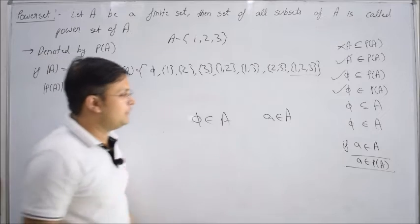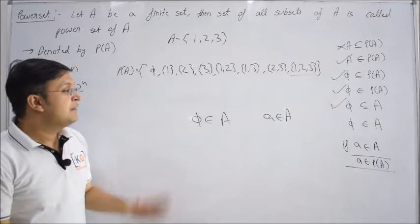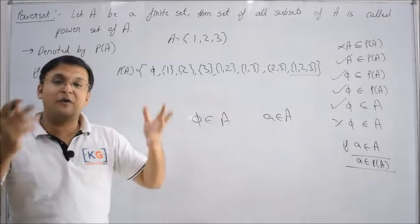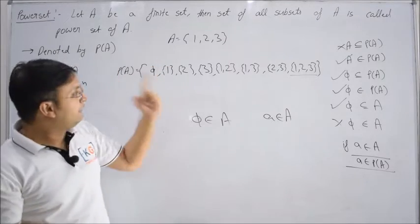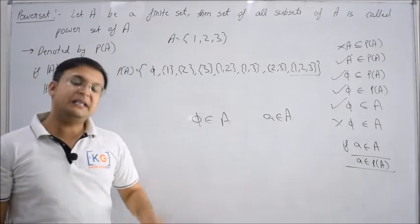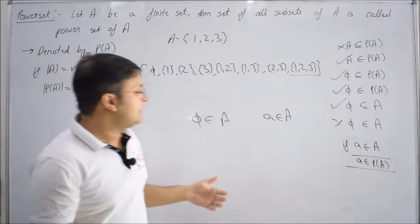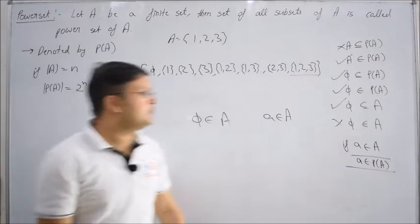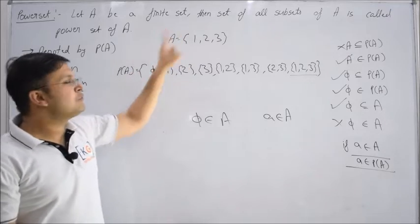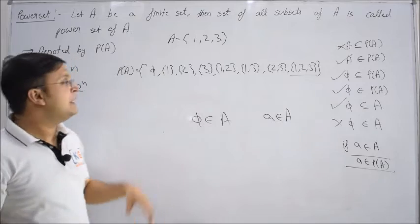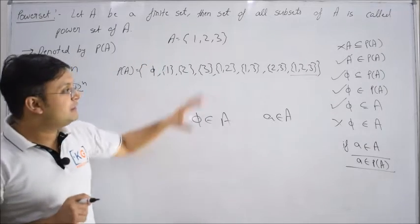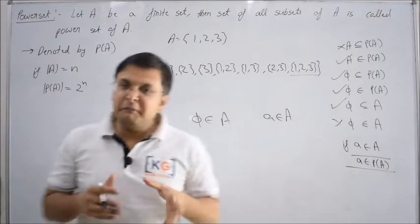Now: Φ is a subset of A — again, Φ is a subset of every set, so TRUE. But does Φ belong to A? No. If Φ belonged to A, you would be able to see Φ as an element listed in A, like we can see it in P(A). But in A = {1, 2, 3}, Φ is not listed as an element. Statement 5: If a element belongs to A, then a also belongs to P(A). This is FALSE — 1 belongs to A, but 1 does not directly belong to P(A); only the set {1} does.